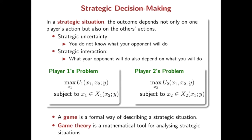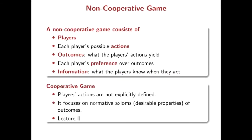A game is a formal way of describing such strategic situations, and game theory is a mathematical tool for analyzing strategic situations. Game theory is typically divided into two different approaches: one is non-cooperative approach, and the other one is cooperative approach. A non-cooperative game consists of those components: the players, and each player has some possible actions. Each combination of the players' actions is a particular outcome. Each player has preferences over those outcomes. And also information — what the players know when they act — is also important.